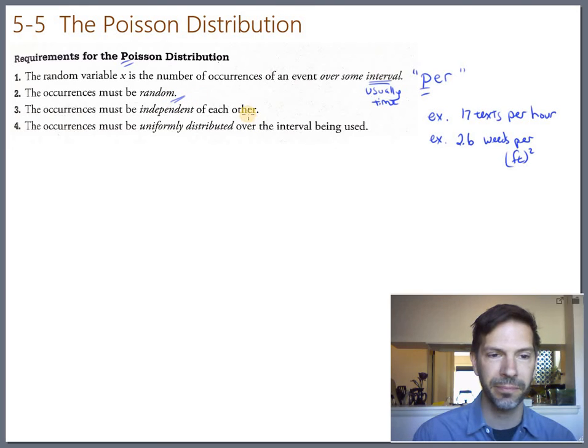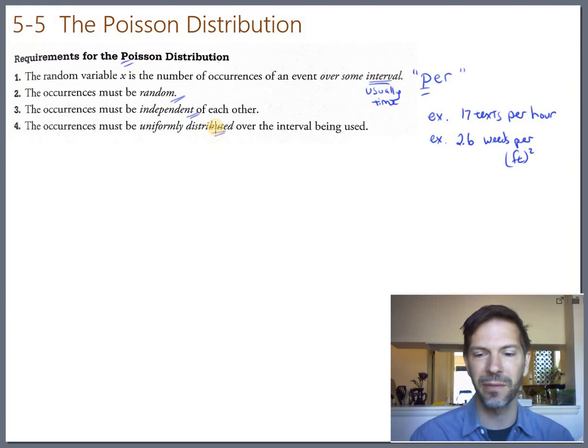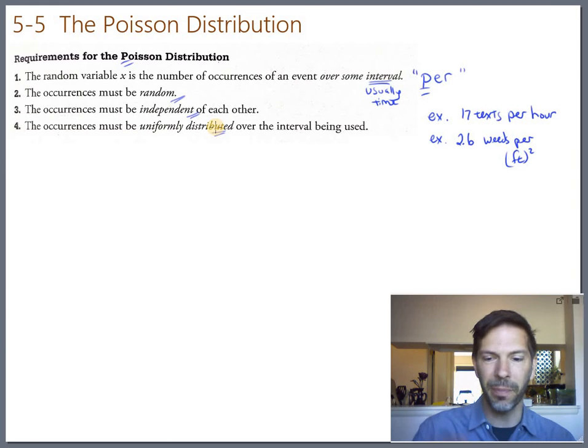These occurrences have to be random. So it can't be that you're getting 17 texts per hour because you're getting one every 2.6 minutes on the clock. That's not random. The occurrences must be independent of each other, just like they are for binomials. So what happens with one can't affect another one. And uniformly distributed, evenly distributed. What they're saying is we don't want random clusters or clumps. We don't want the rate to go up at the beginning of the hour or drop off at the end. It needs to be evenly random throughout the whole interval.